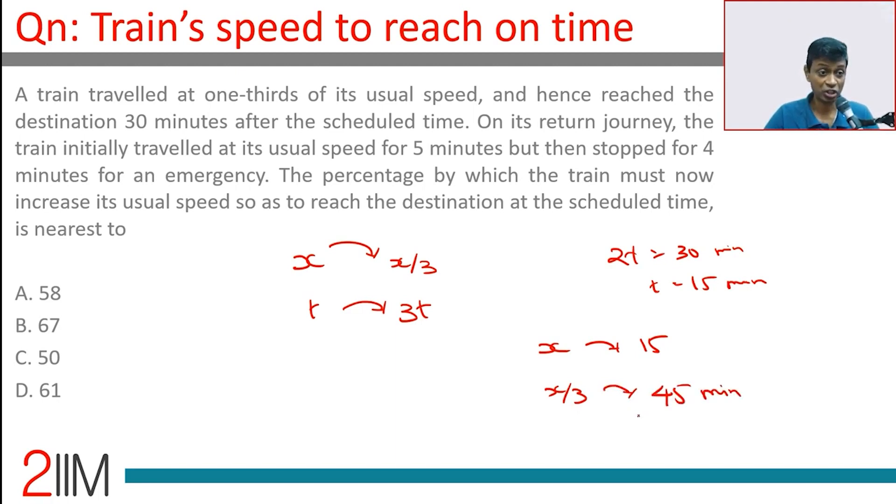On its return journey the train initially traveled at its usual speed for 5 minutes. At usual speed it would have covered the whole distance in 15 minutes. So for 5 minutes coming back, one-third of the distance would have been covered.